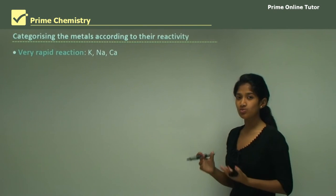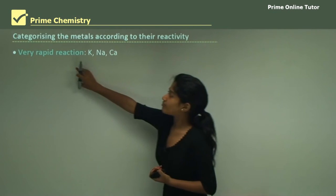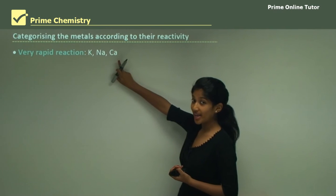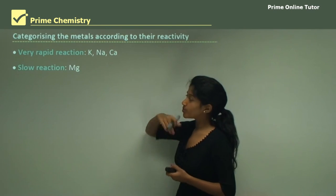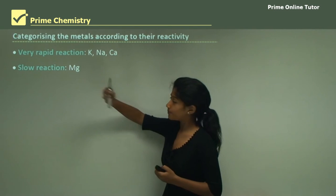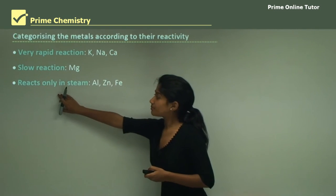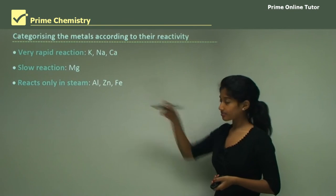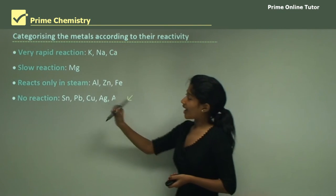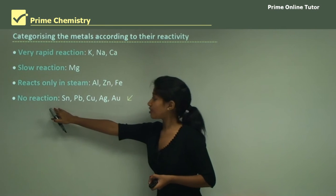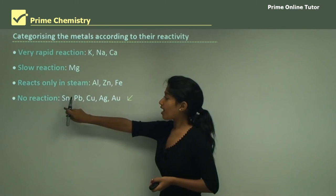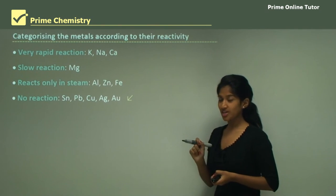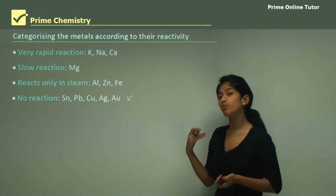Let's summarize what we just covered. Rapid reactions occur with potassium, sodium and calcium. Slow reactions happen with magnesium. The metals that react with steam are aluminium, zinc and iron. Metals that don't react at all are tin, lead, copper, silver and gold. This is a summary of the reactivity of metals with water.